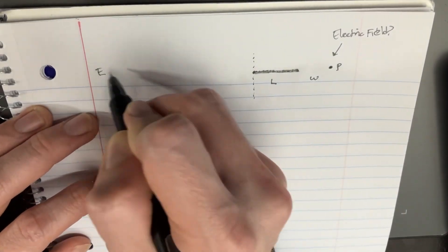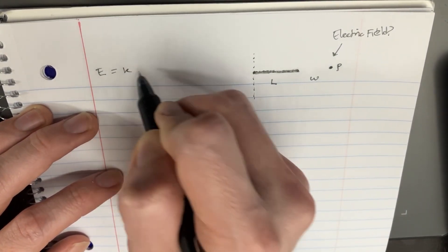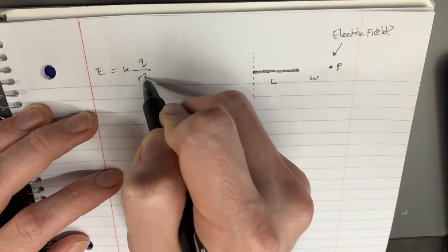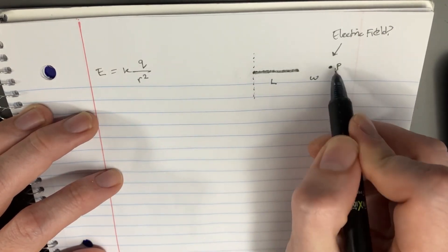Here's the charge thing. So we would start with E equals KQ over R squared. You've got to figure out what R squared would be.